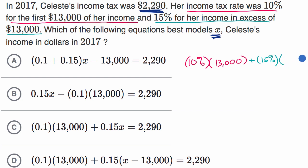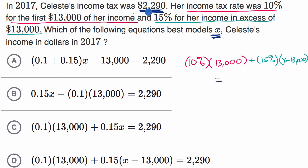How could we express that? Her income in excess of $13,000 would be X minus $13,000. This would be her total income tax, and all of that should be equal to $2,290.